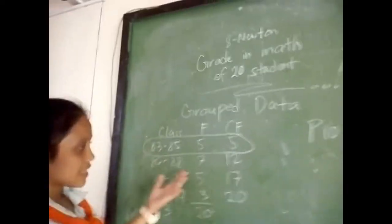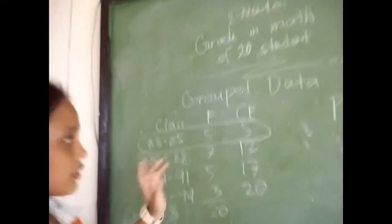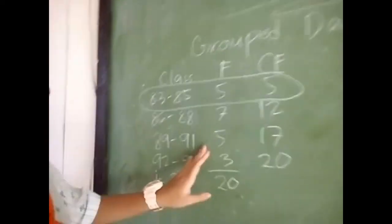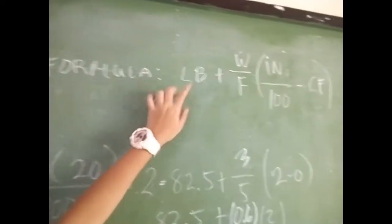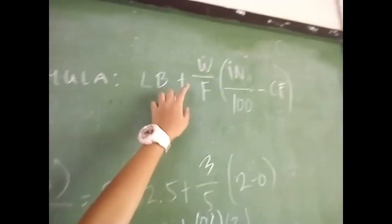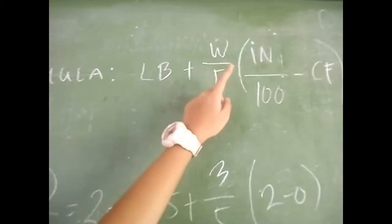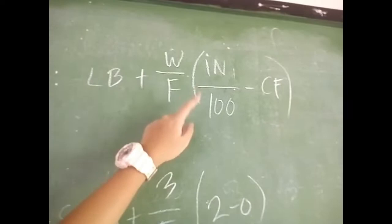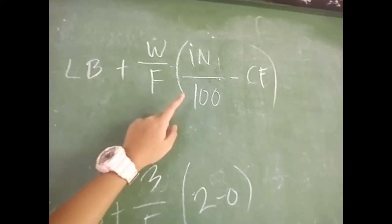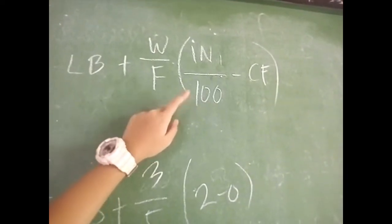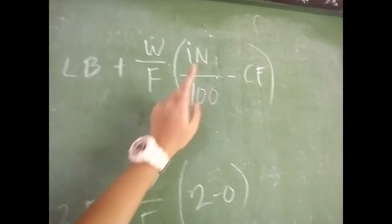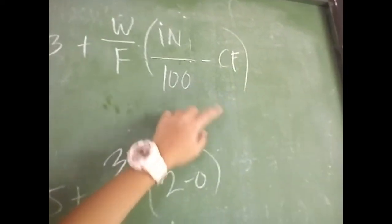So, last example. We have an example for grouped data. Here's the data — 20 students in math. Here's the formula: lower boundary plus, in brackets, K times N divided by 100, minus the preceding cumulative frequency, divided by the class frequency, times the class interval. And the total frequency by 100 minus the cumulative frequency gives P79.